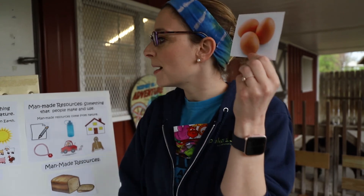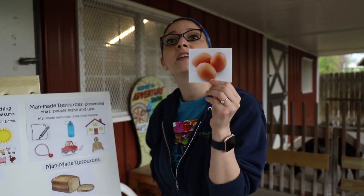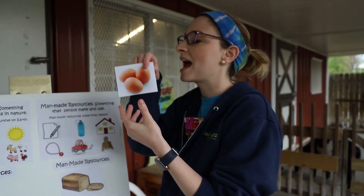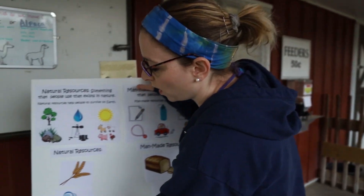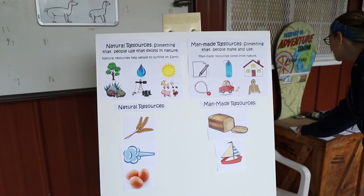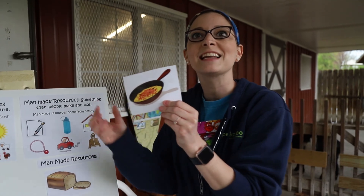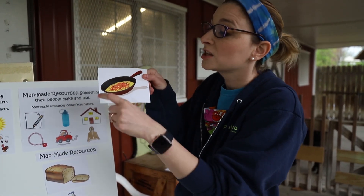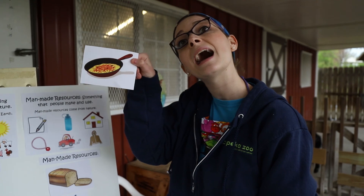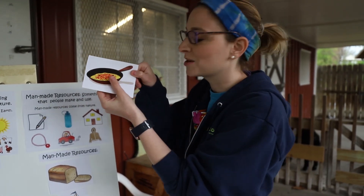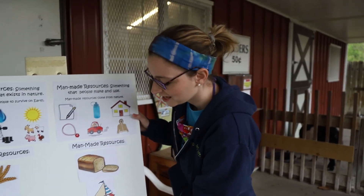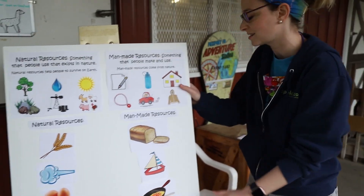Eggs — this is a good one, a little bit trickier. Eggs come from chickens, and remember all animals are a natural resource. So eggs and milk are natural resources as well. But if you turn that egg into an omelet by putting it in a pan and adding a bunch of other things, humans are making it into something. And so now it is a man-made resource — as soon as you turn it into an omelet, you are changing it.